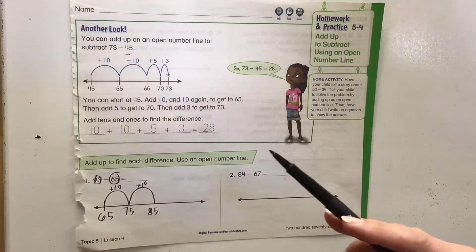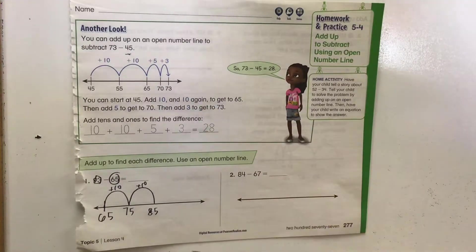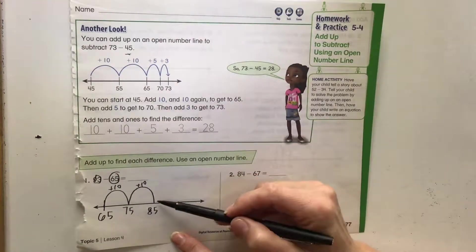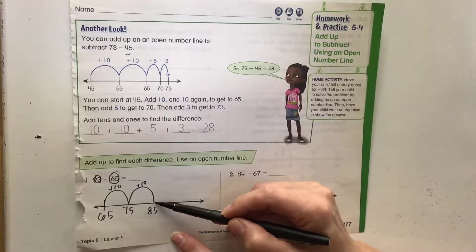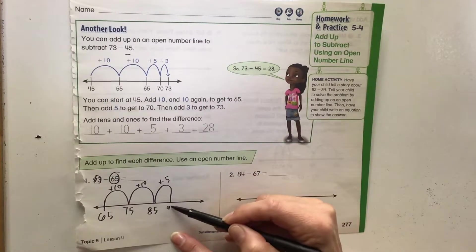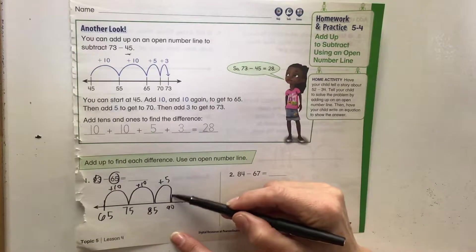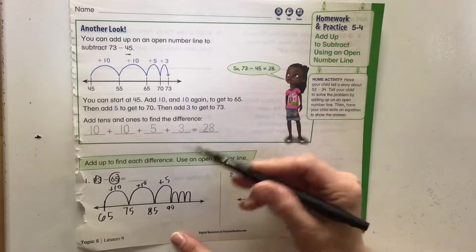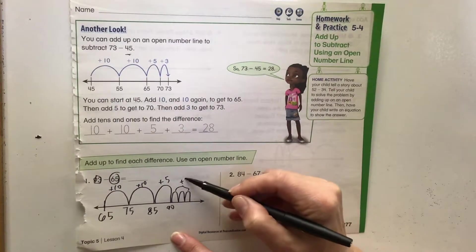Now we need to get up to 93. So we're at 85, we can go a hop up to 90 of plus 5. And then we need to get to 93: 1, 2, 3. So this is our plus 3 here.